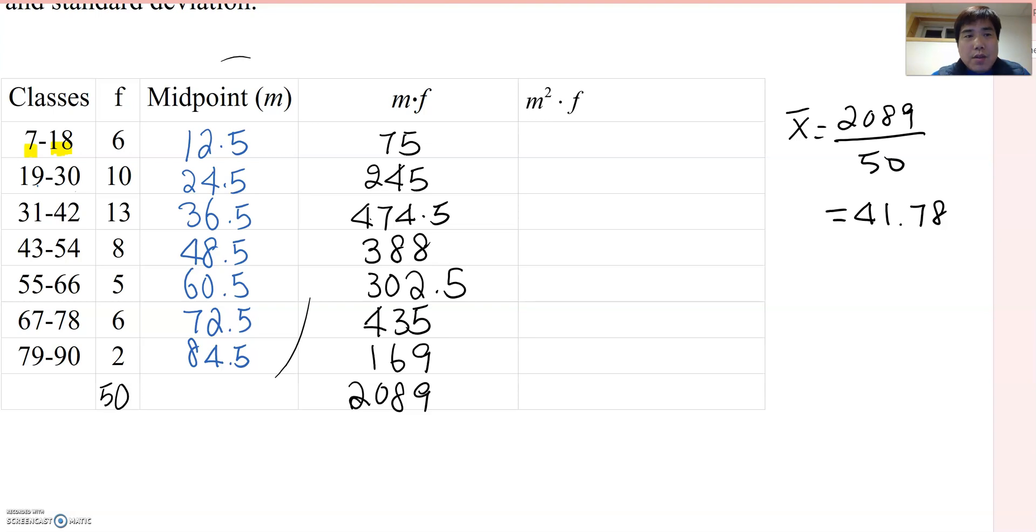So this column shows that m squared times f, which means you square this value times frequency. So if you do it, so 12.5 square times 6, therefore this becomes 937.5.